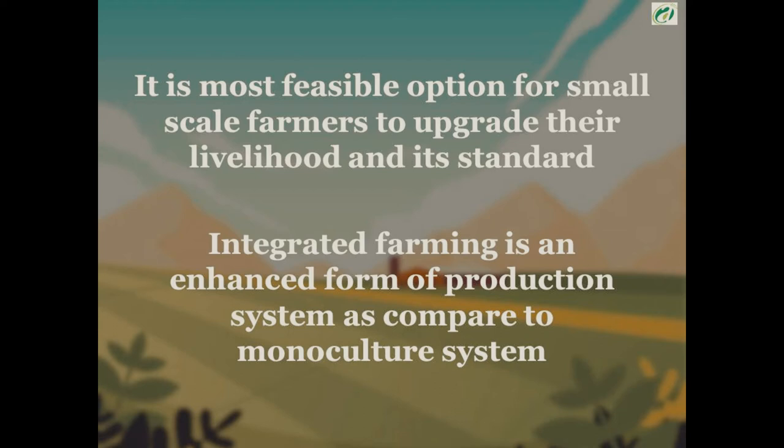Integrated farming is also described as an enhanced form of production system compared to the monoculture system. The monoculture system is one where only one type of crop is raised — for example, just having a wheat crop on your field with nothing else being reared on the same land. This is monoculture.